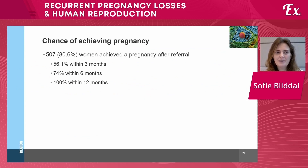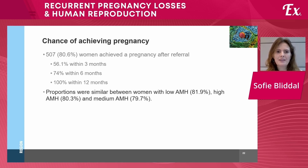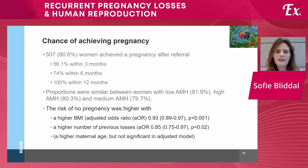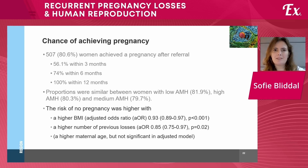When looking at the chance of achieving pregnancy, there were 507 women who achieved a pregnancy after their referral — a little more than half within the first three months, but all within the first 12 months. The proportions of women who achieved pregnancy were similar between those with low, medium, and high AMH. So the AMH level itself did not associate with the chance of achieving pregnancy. The risk of not achieving pregnancy was higher with higher BMI, higher number of previous losses, and higher age, but in the adjusted analysis, this was not the case.